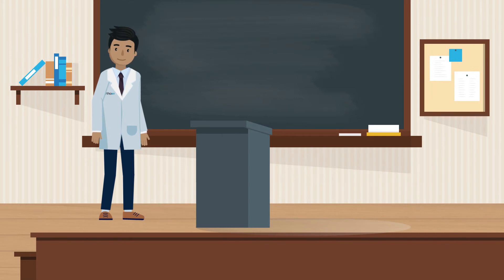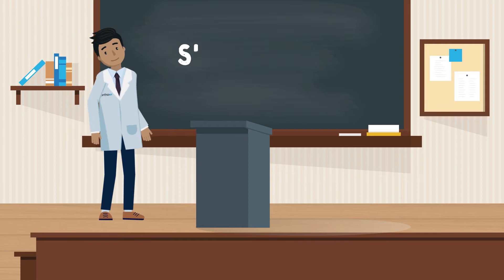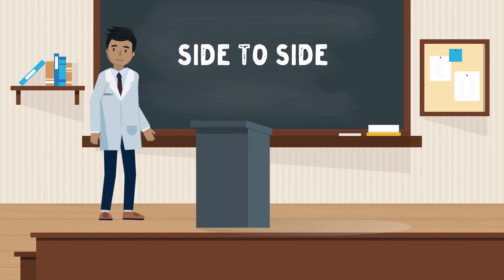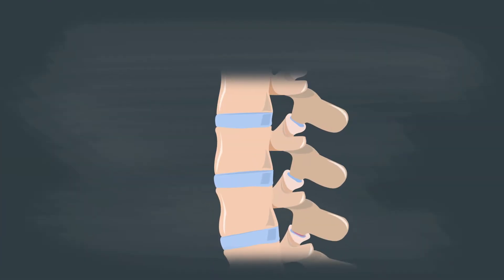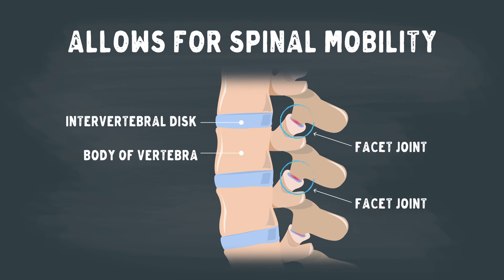We have a simple exercise to illustrate this idea. Try bending backwards. Now try bending side to side. All right, ready for the challenge? Try bending backwards and side to side at the same time. You wouldn't be able to do this if it weren't for the facet joints.